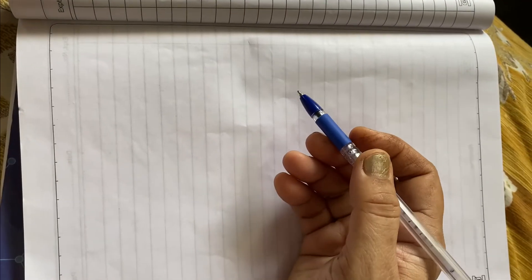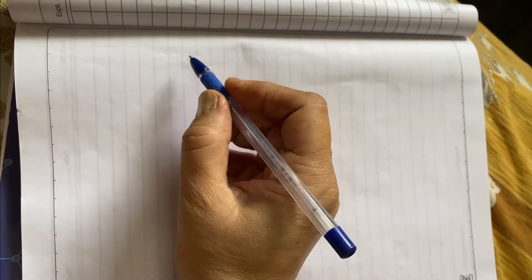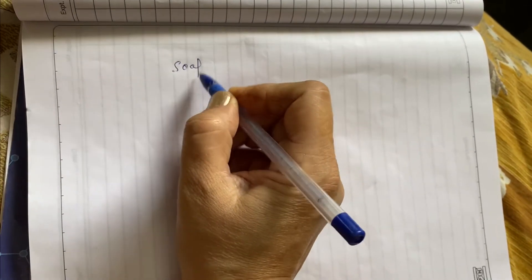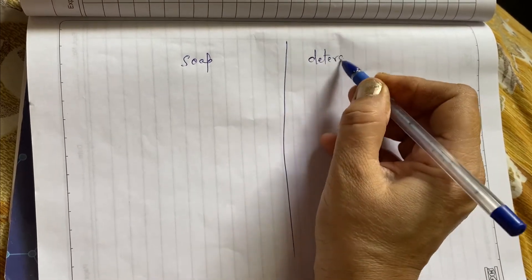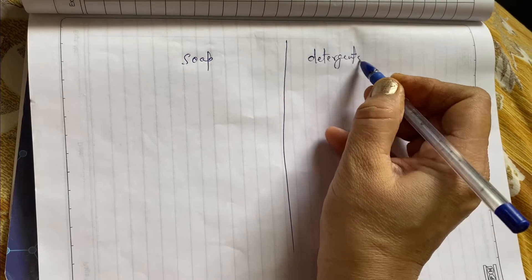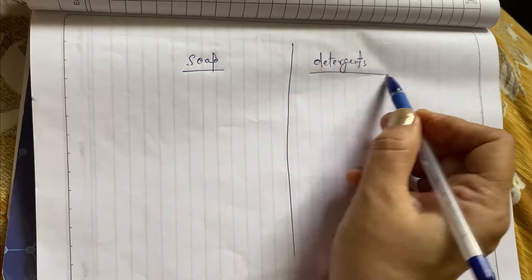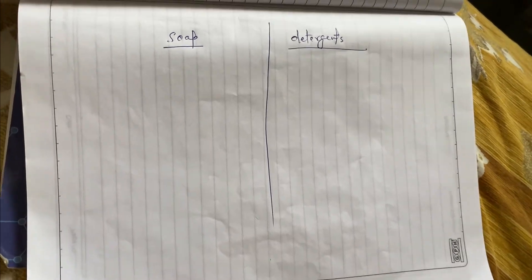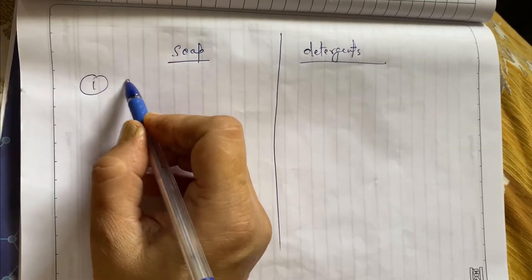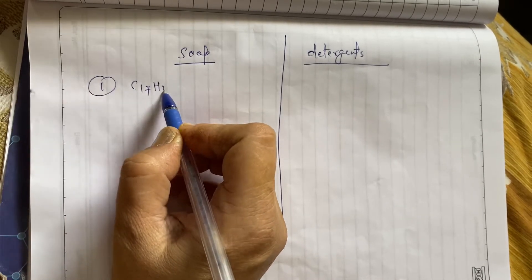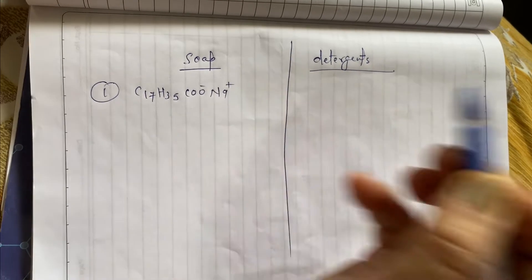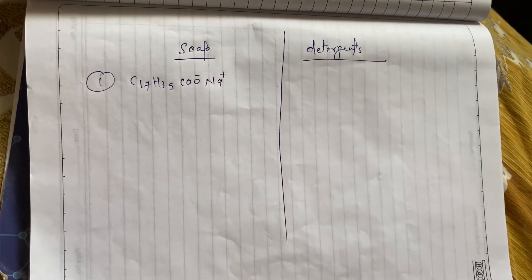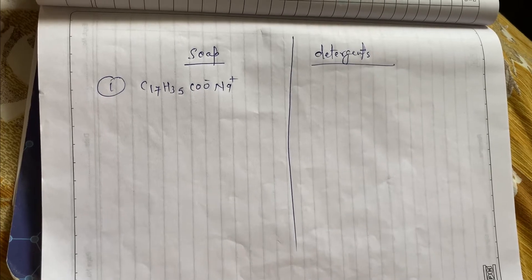Now let's get into the main content. First, let's see the main differences between soap and detergent. Soap — first of all, we need to know the formula. Soap is C17H35COONa — it is minus and it is plus. Sodium and potassium salt of fatty acids.